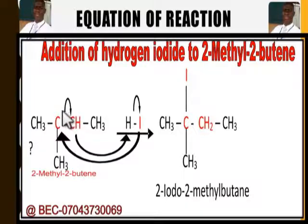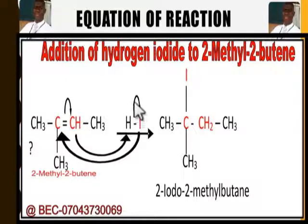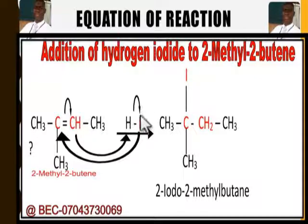The arrows show how the bond breaks. When you break this bond using the arrow, the two electrons that constitute this bond are transferred to one carbon atom, making it negatively charged, while the other carbon atom that loses the electrons becomes positively charged. For hydrogen iodide, iodine is more electronegative than hydrogen, so it pulls the two electrons to itself and becomes negatively charged — the hydrogen becomes positively charged.